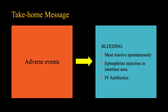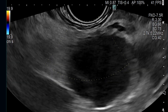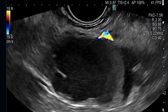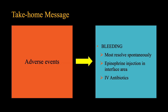Bleeding during EUS-guided cyst aspiration happens oftentimes due to inadvertent puncture of the intervening vasculature. If cyst aspiration is the only objective, use of an FNA needle will suffice. The trauma caused by the blunt tip needle is minimal, and the bleeding usually resolves spontaneously. On the other hand, the trauma caused by the sharp tip of an FNB needle, as shown in case 1, can be severe. This is particularly relevant, as fluid-filled cysts in the absence of a solid component when aspirated do not provide any mechanical compression of the intervening vessels.